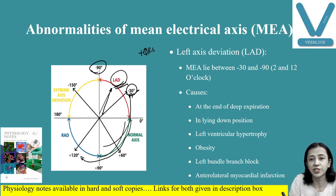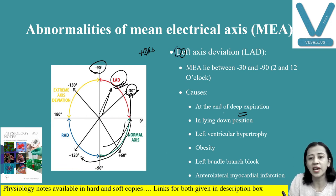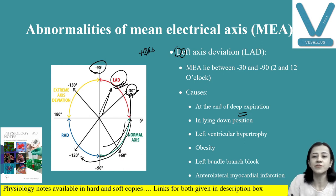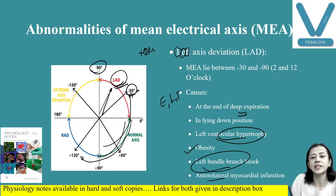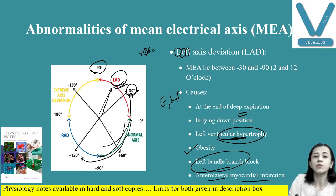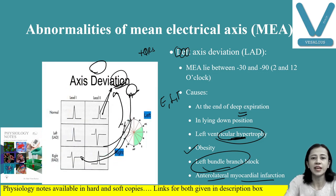The causes for left axis deviation can be remembered using the mnemonic ELF. E for end of expiration — at the end of deep expiration. L for lying down position. F for fatty — obese individuals. These are physiological causes. Pathological causes include left ventricular hypertrophy, left bundle branch block, and anterolateral myocardial infarction. In left ventricular hypertrophy, the hypertrophied left ventricle requires more time to depolarize, resulting in left axis deviation.